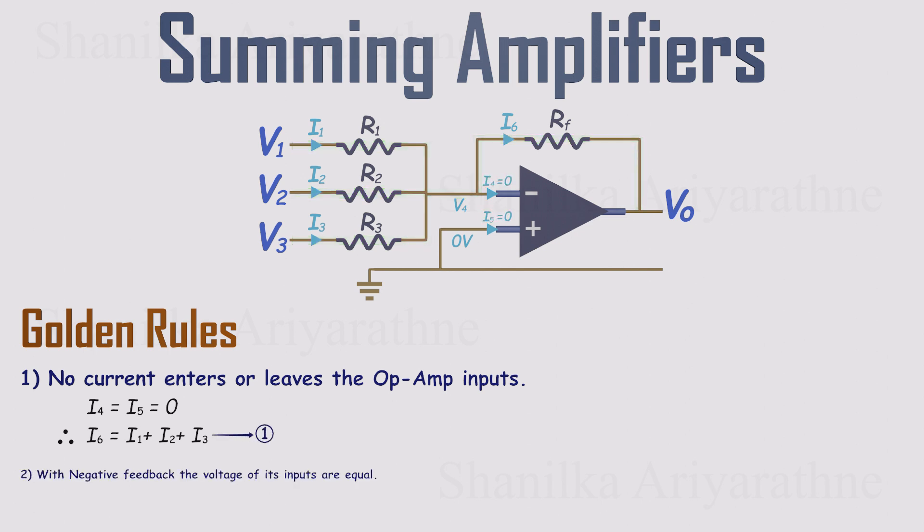Rule 2, with negative feedback, the op-amp drives its output so the inverting and non-inverting inputs sit at the same voltage. The non-inverting input is at ground, so both inputs are effectively at zero volts. That makes the inverting node voltage, V4, equal to zero volts, a virtual ground. That's our second equation.